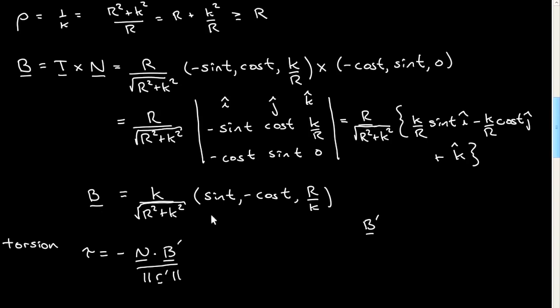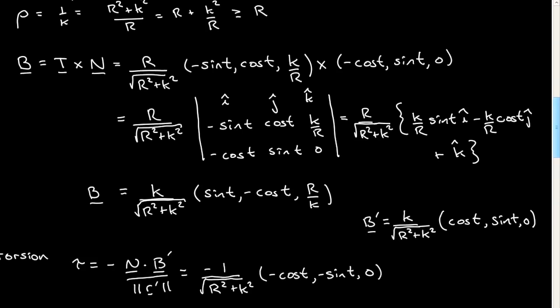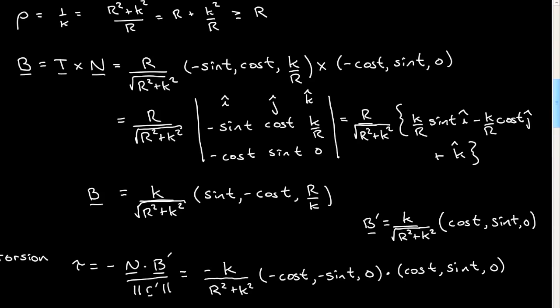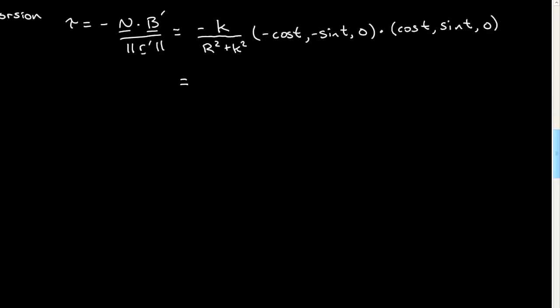We need to differentiate this vector with respect to t. That was easy. So we plug in here. We have -1 over ||r'||. Then we have the dot product between N and—I have k over √(R² + k²), I'm just going to pull that out and put it here. What's left, you can see immediately, the dot product of these two vectors will be -1, which will cancel that minus sign. So the torsion τ will simply be reduced to k/(R² + k²).